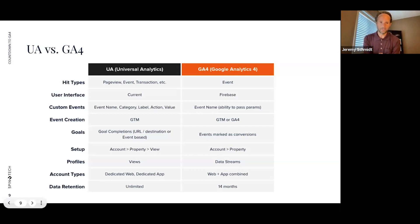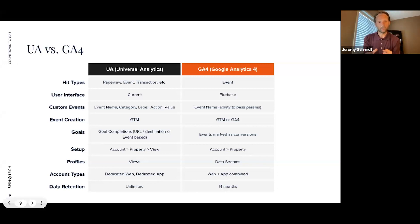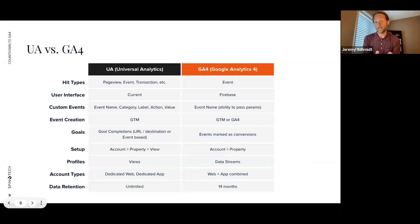Another big change is custom events. If you're doing granular tracking using event category, action, and labels — a nice way to bundle data in a hierarchy — that is no longer available in GA4. You can still pass custom events with as many parameters as you want; it's just a different way of collecting and reporting on that data in Google Analytics.